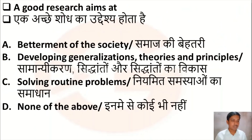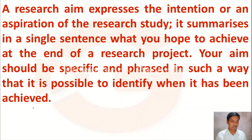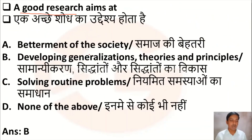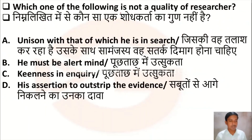The next question is: a good research aims at — Option A: betterment of the society, Option B: developing generalizations, theories, and principles, Option C: solving routine problems, Option D: none of the above. A good research aims to express the intention or aspiration of the study and summarizes what you hope to achieve. Good research always aims at developing generalizations, theories, and principles, so Option B is the correct answer.